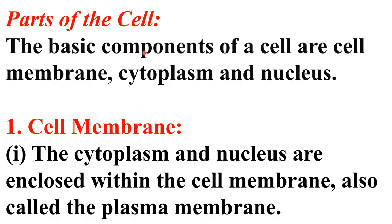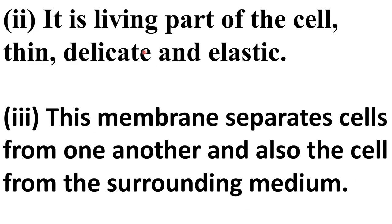Now we will talk about parts of the cell. The basic components of a cell are cell membrane, cytoplasm, and nucleus. The cytoplasm and the nucleus are enclosed within the cell membrane, also called the plasma membrane — cell membrane and plasma membrane are the same thing. It is a living part of the cell, and it is thin, delicate, and elastic.